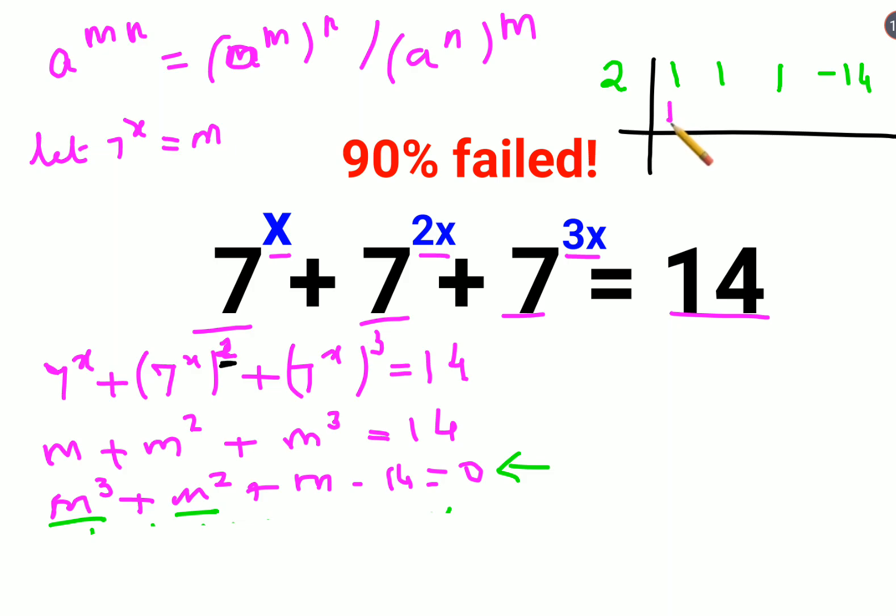The first thing what you do is take this number as it is. Multiply 2 into 1 that gets you 2. Add 1 plus 2 gets you 3. Multiply 2 into 3 gets you 6. Add 1 plus 6 gets you 7. Multiply 7 and 2 you get 14. And minus 14 plus 14 gets you 0.